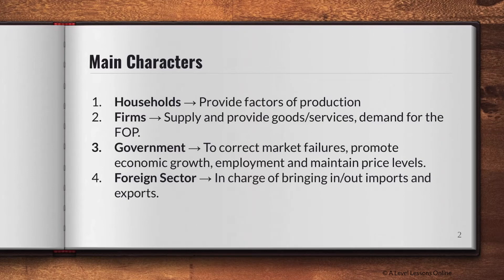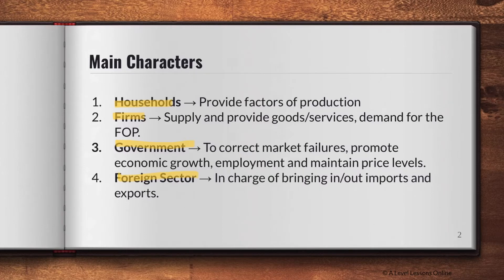Circular flow of income isn't exactly the most important thing in macroecons — it's more of a preamble, a beginner-stage understanding of what macroecons is going to be about. You have four main characters in any economy: households — basically you and I, consumers — who provide factors of production like labour. Then you've got firms, who supply goods and services and demand factors of production. After that you have the government, who corrects market failures and intervenes when markets are inefficient, aiming for social stability. And lastly, the foreign sector, which handles imports and exports — imports come into the country, exports go out.